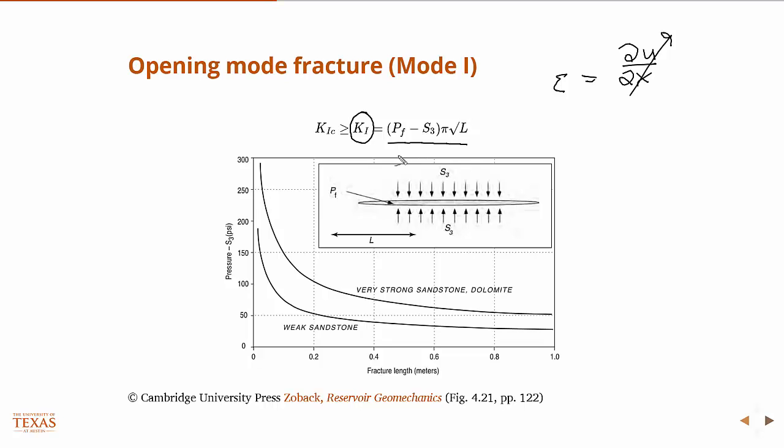And so whenever the stress intensity factor exceeds some critical value, and that critical value is a material property. So you can think of it just like Young's modulus E or Poisson ratio ν. The critical value of stress intensity factor which we call the fracture toughness, this is K_IC. The fracture toughness of the material is a material property. So whenever the stress intensity factor exceeds the critical value, the crack will grow.